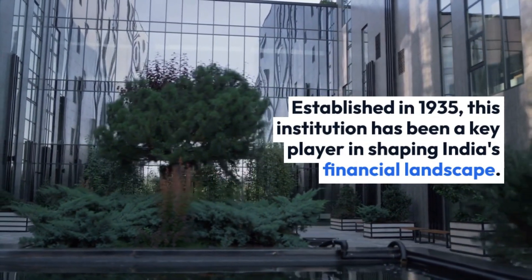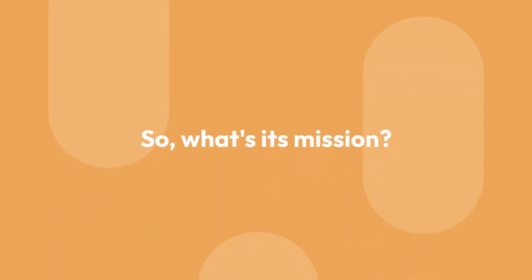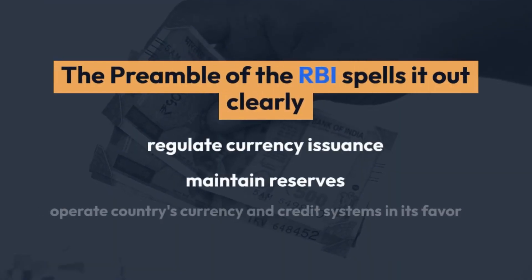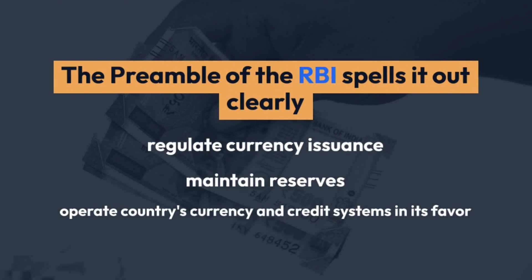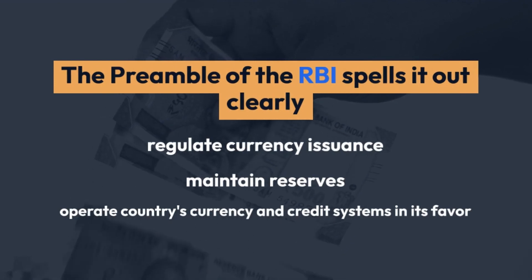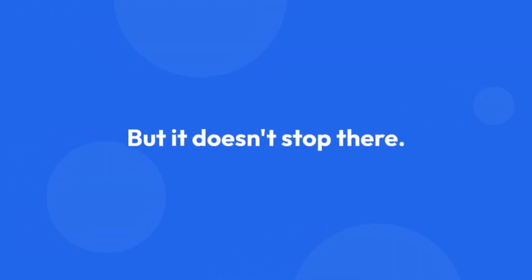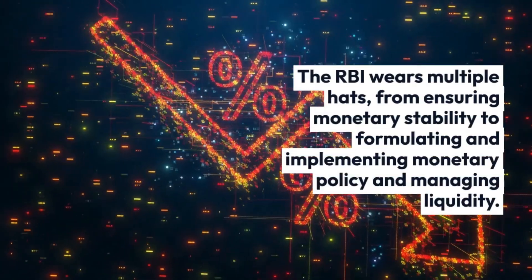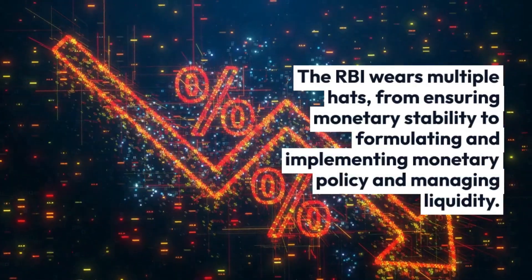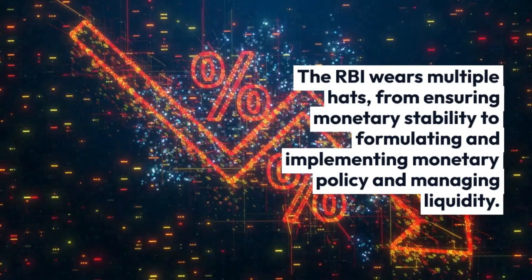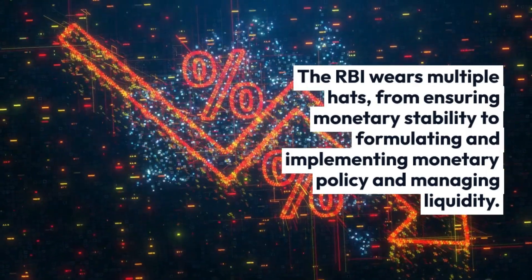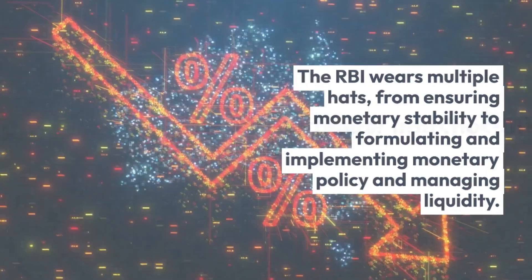So what's its mission? The preamble of the RBI spells it out clearly: to regulate currency issuance, maintain reserves, and operate the country's currency and credit systems in its favor. But it doesn't stop there — the RBI wears multiple hats, from ensuring monetary stability to formulating and implementing monetary policy and managing liquidity.